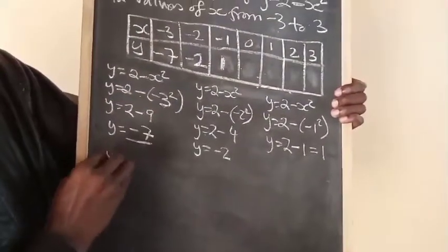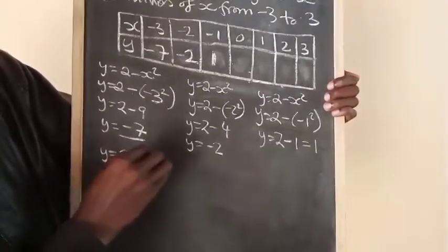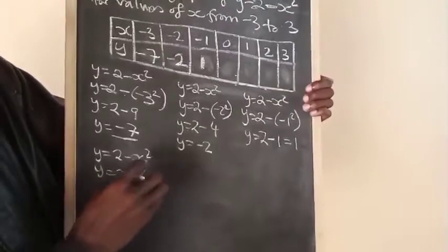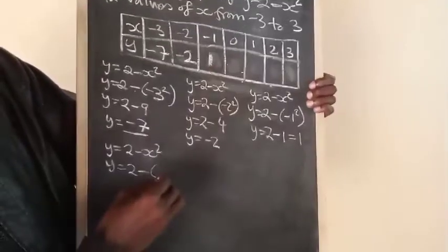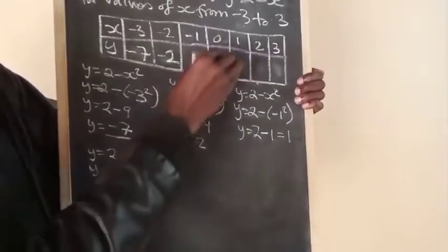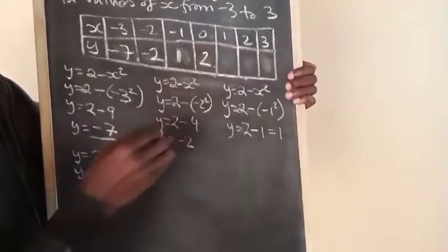Then when x equals 0: y equals 2 minus x squared. Y equals 2 minus 0 squared, which is 0. So 2 minus 0 equals 2.